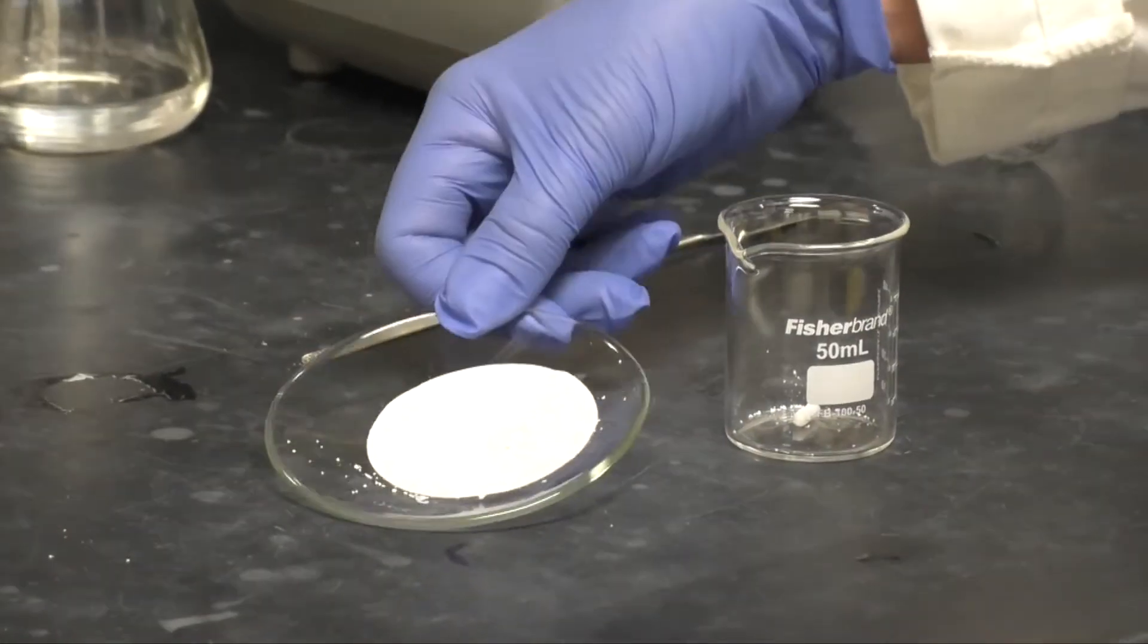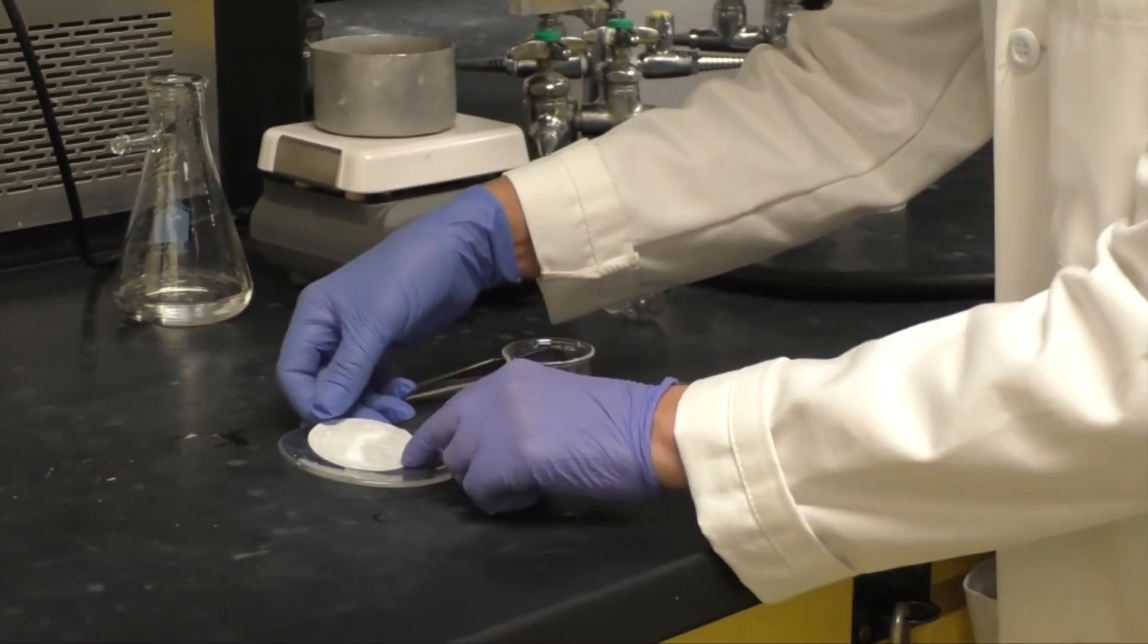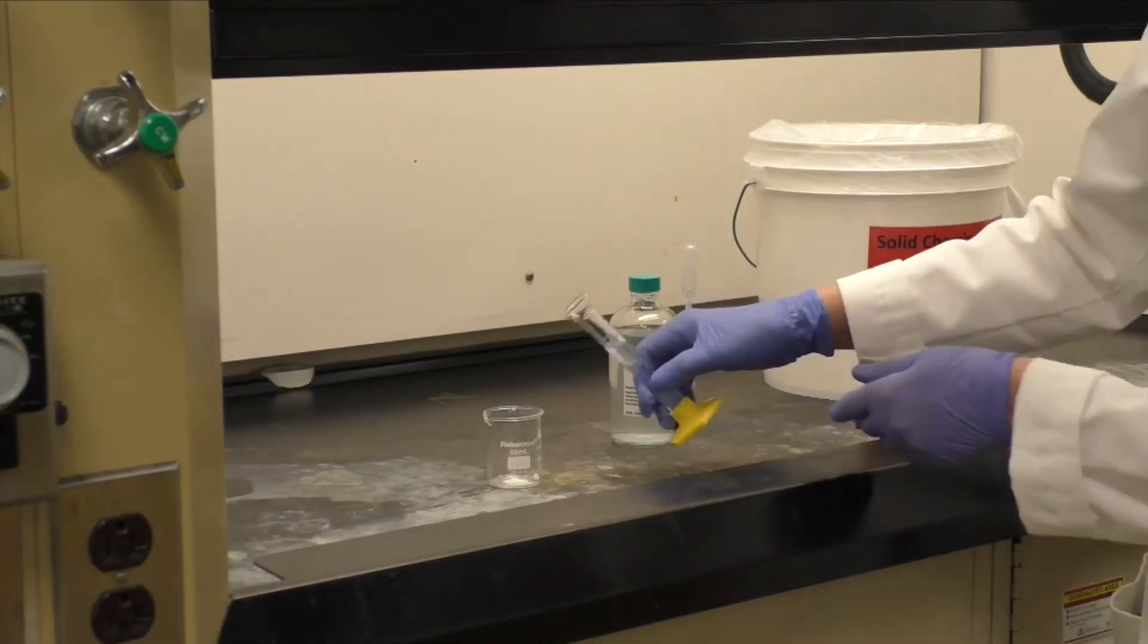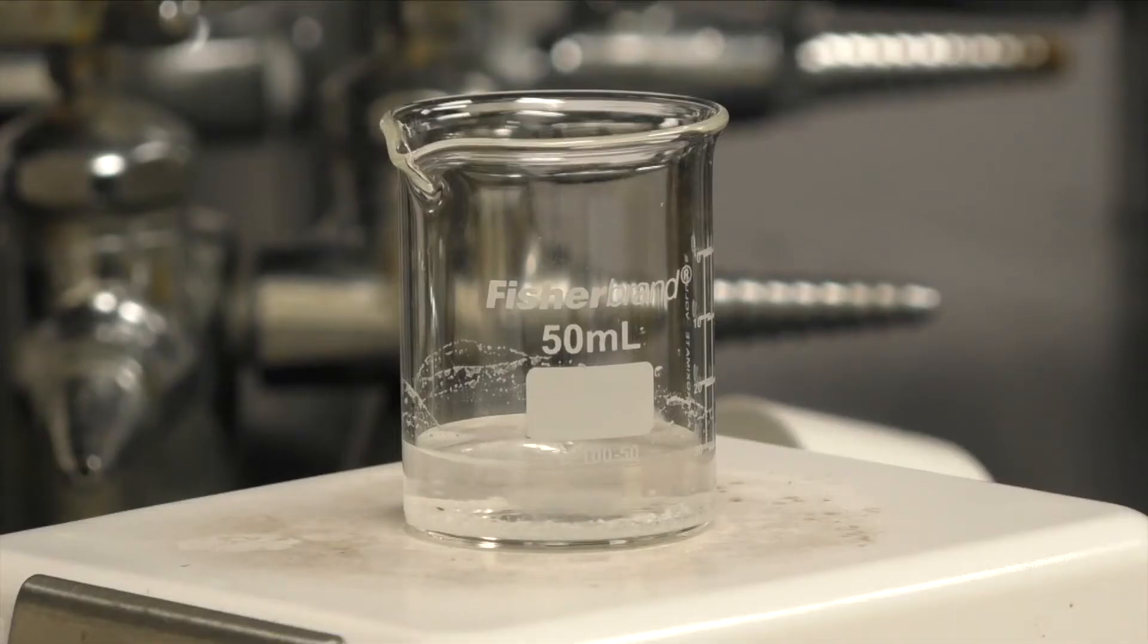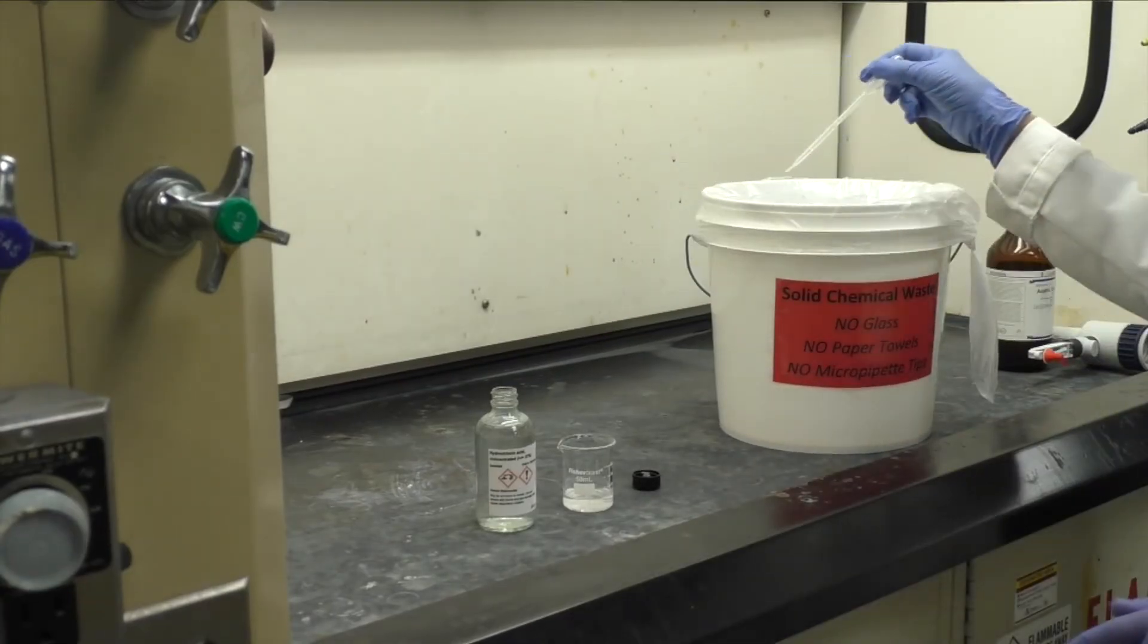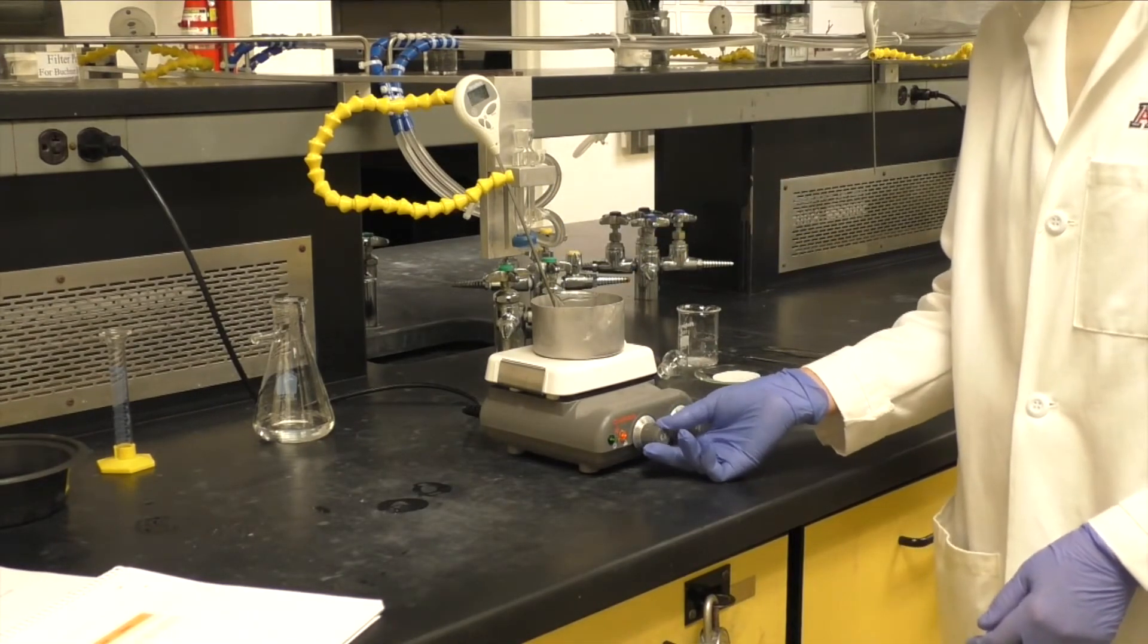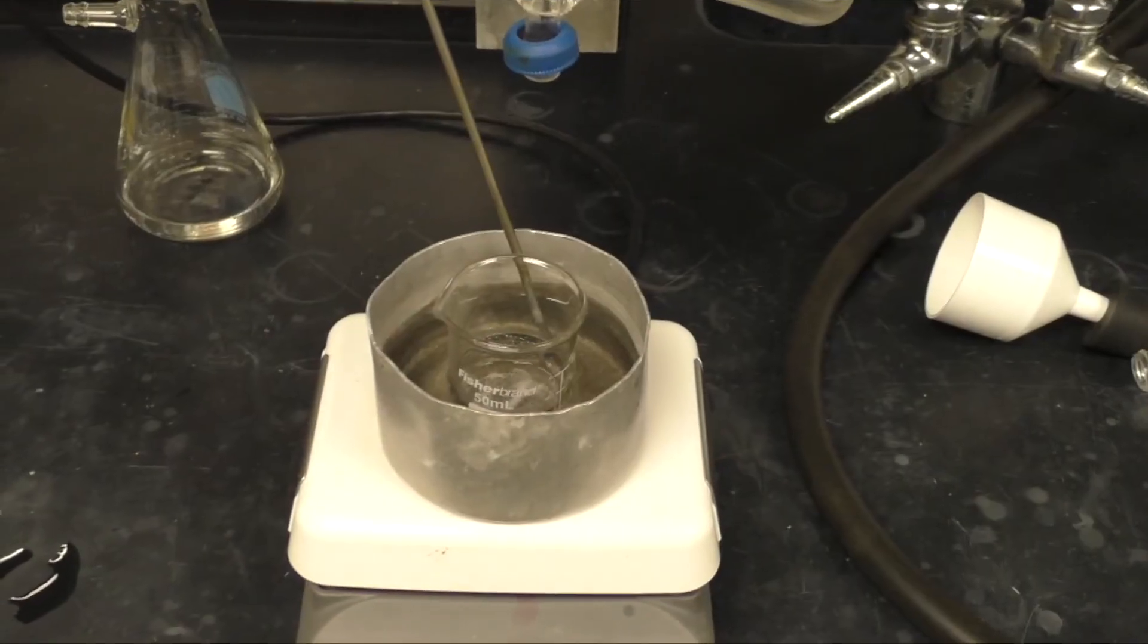Transfer your crystals into a clean 50 milliliter beaker containing a stir bar. Add 10 milliliters of 25% acetone in water and stir. Then add 2 to 3 drops of concentrated hydrochloric acid. Heat the mixture in your water bath while stirring at 60 to 80 degrees Celsius for 10 minutes. Do not allow the mixture to boil.